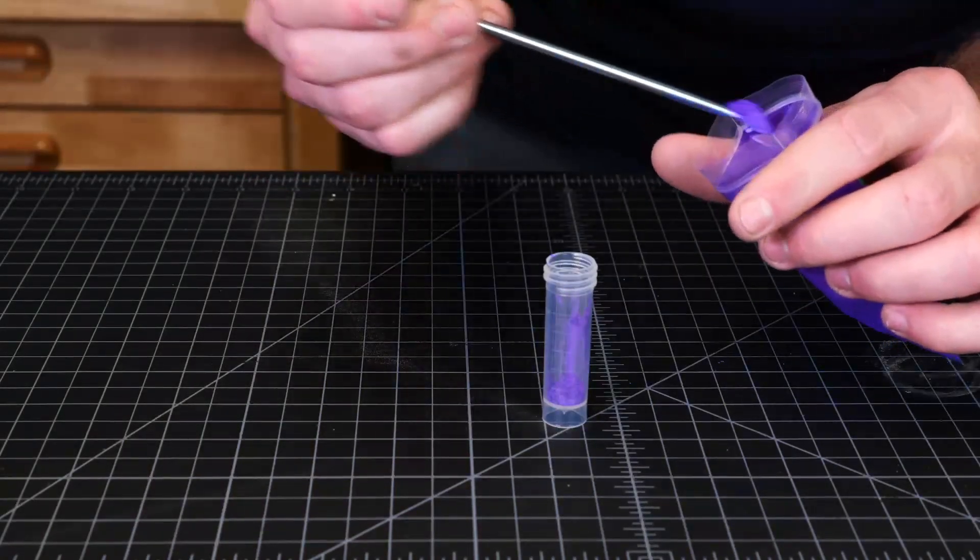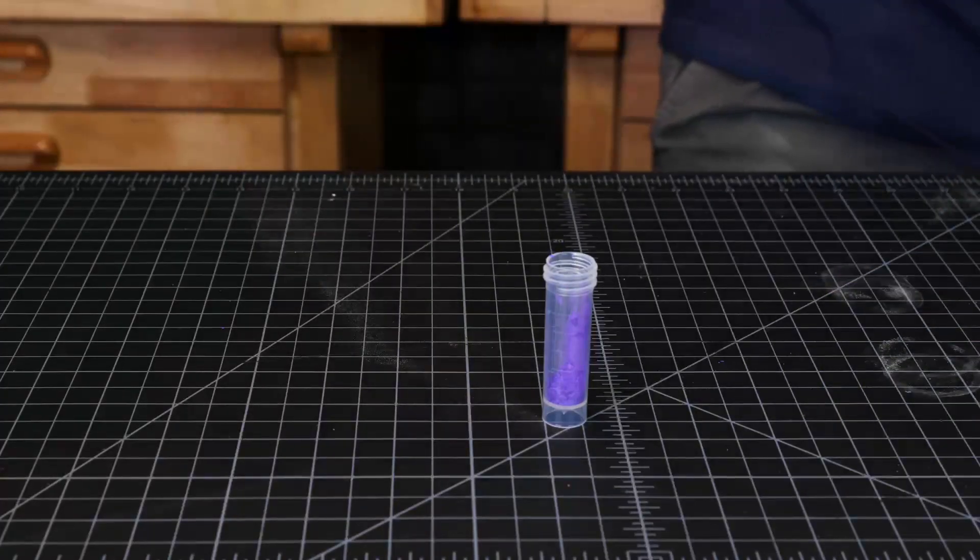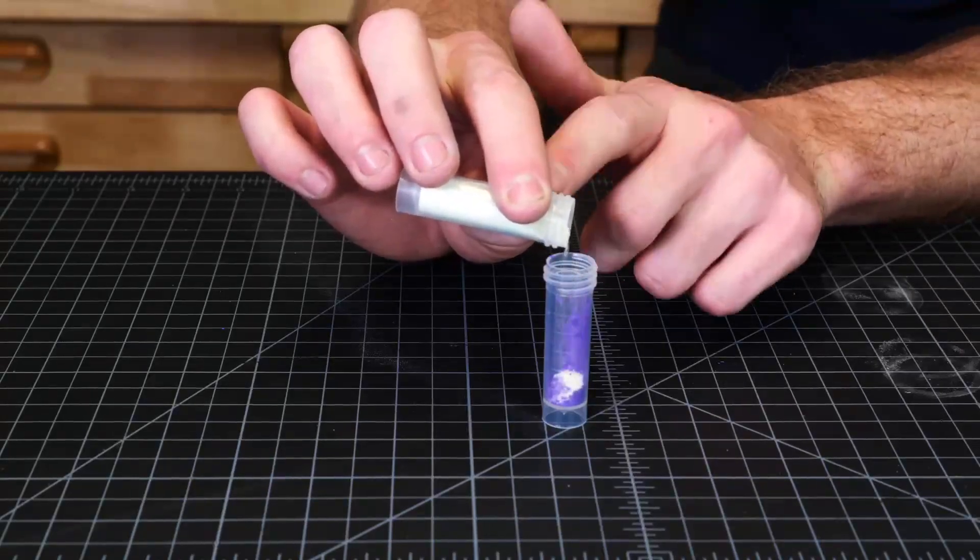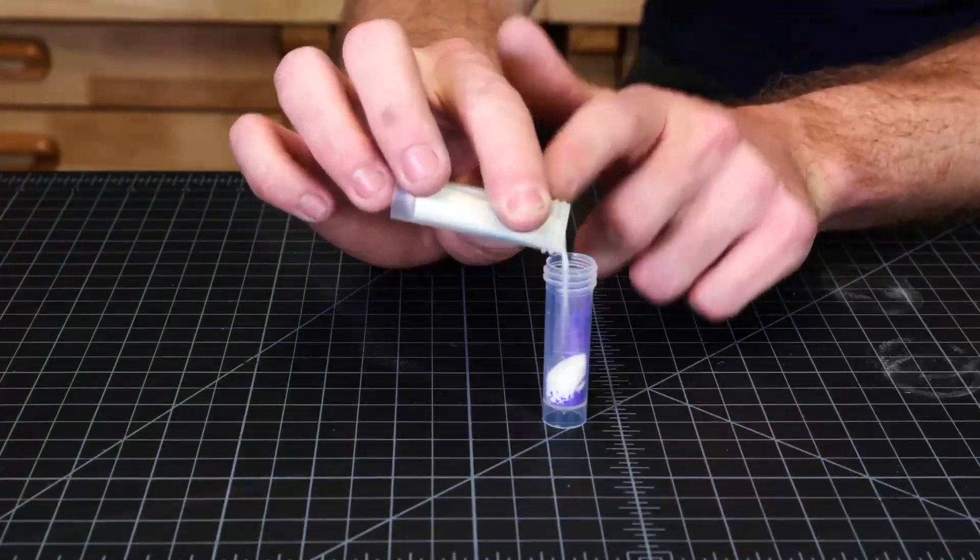Next we went ahead and mixed our violet with our blue glow powder as well. Same thing here, just one or two scoops of the color pigment, fill about a third of the vial with glow powder and then thoroughly shake it.